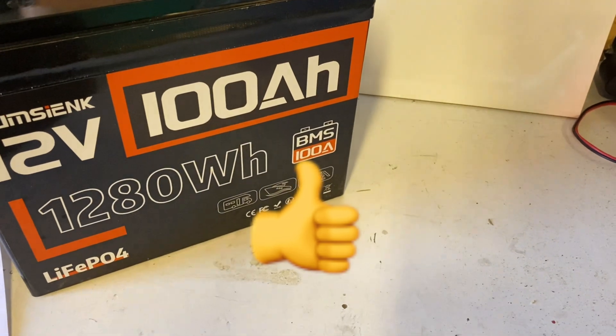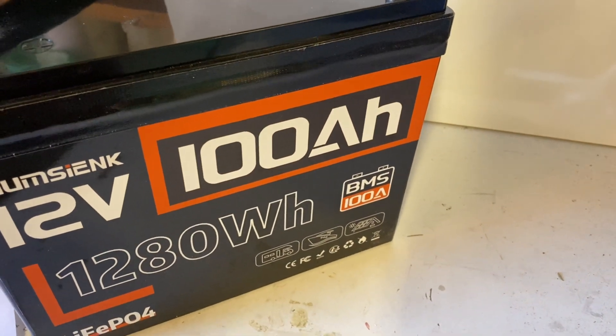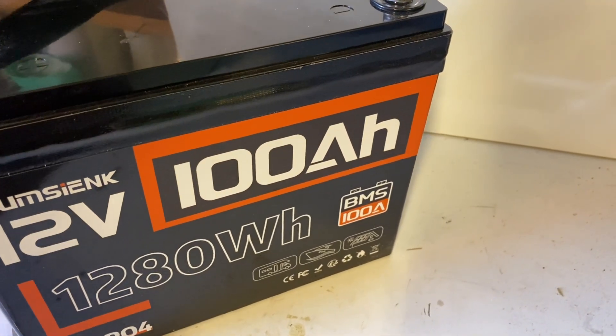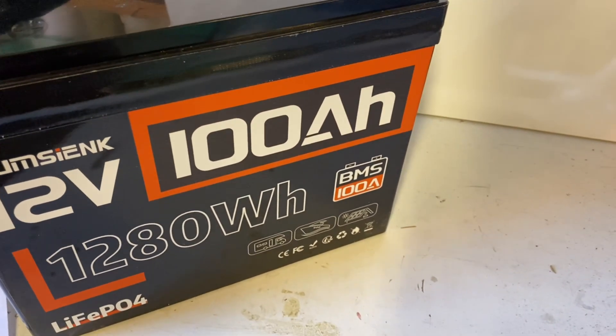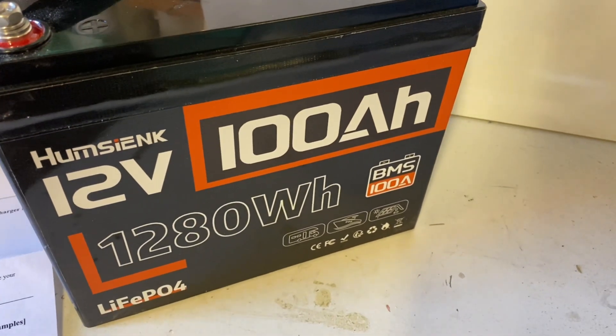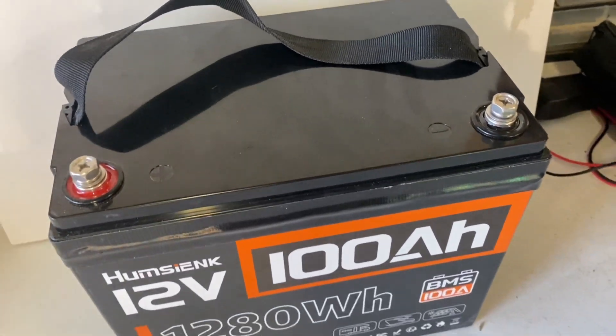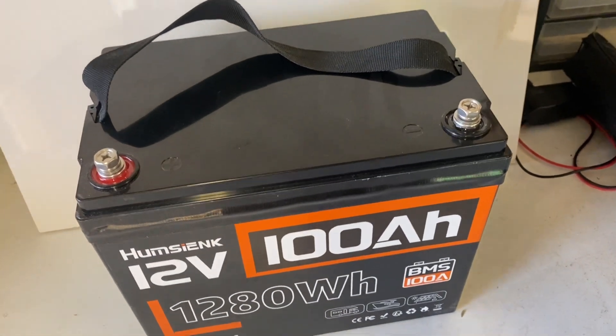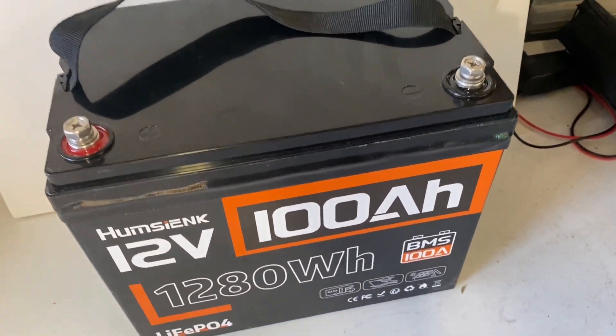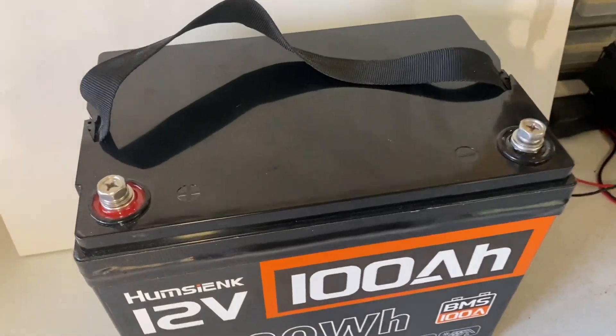Now, the thing about lithium iron phosphate batteries is that it will give you almost about 100% of usable capacity, meaning you can use pretty much all of your 100 amp hours, compared to a lead acid battery which could only draw about 50 to 60% of the rated capacity without damaging the battery.